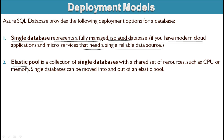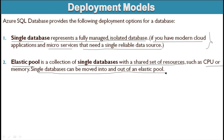Next is the Elastic Pool. An Elastic Pool is a collection of single databases with a shared set of resources such as CPU or memory. Single databases can be moved into and out of an Elastic Pool. In an Elastic Pool, resources are shared across databases, unlike the Single Database model.